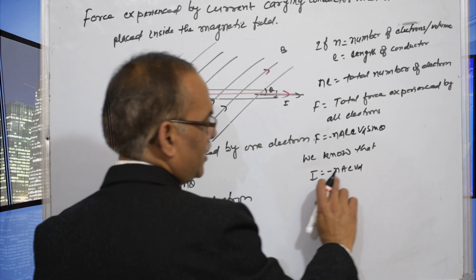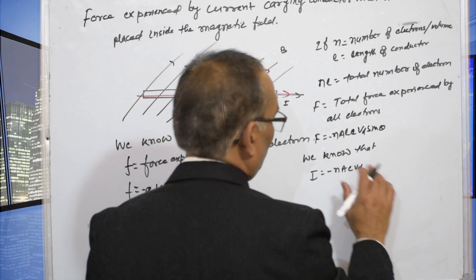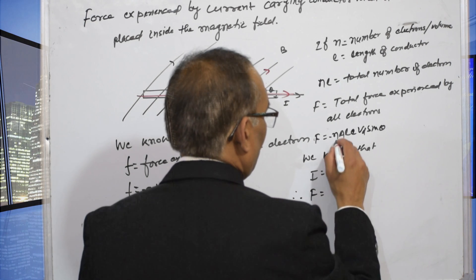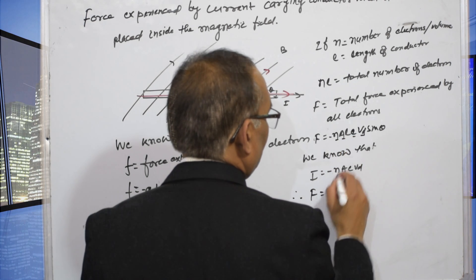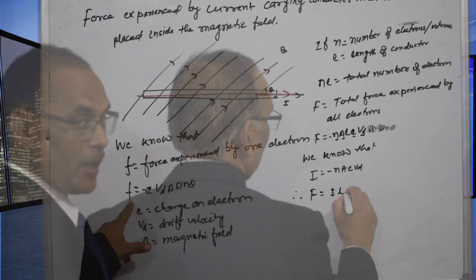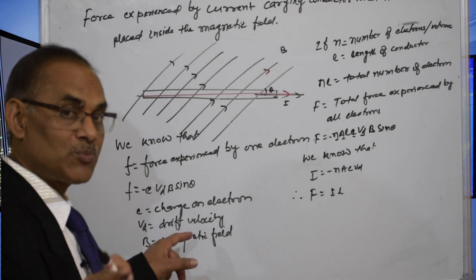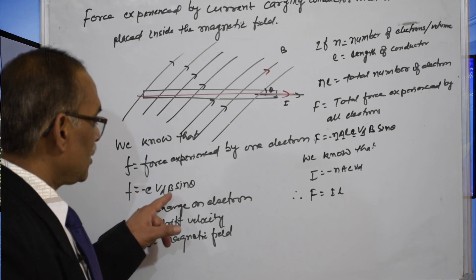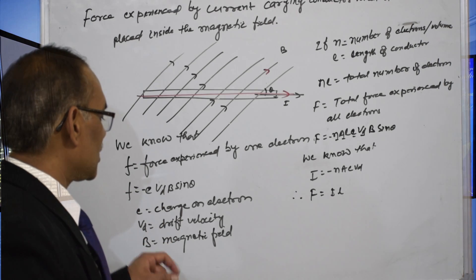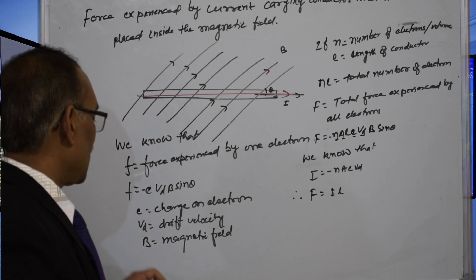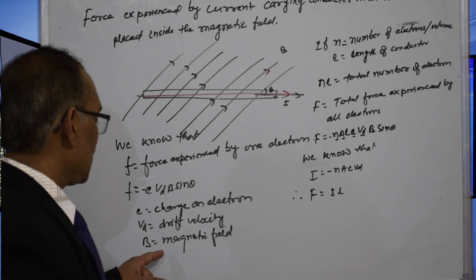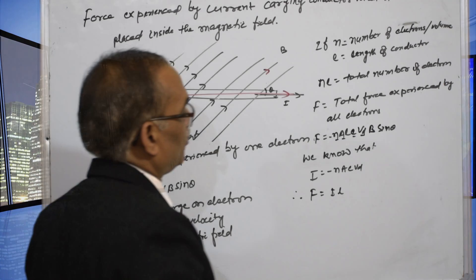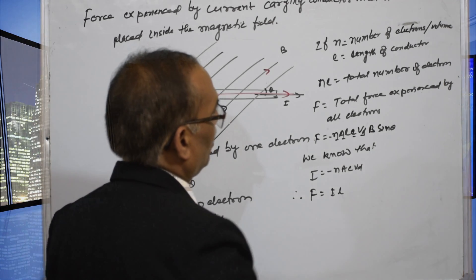We know that the drift velocity and electric current are related by I equals minus N A E V_d. So F equals N A E V_d. Here, small f is the force experienced by one electron, equal to minus E V_d B sin theta. E is the charge on one electron, V_d is the drift velocity, and B is the magnetic field. N is the number of electrons per unit volume and L is the length of the conductor.